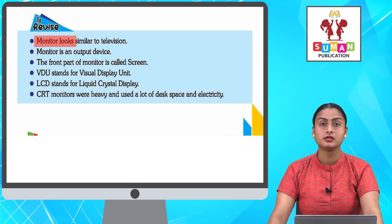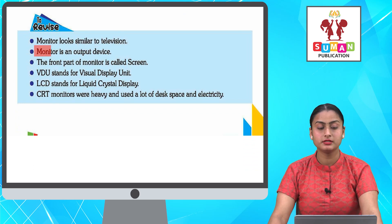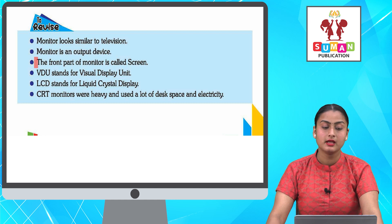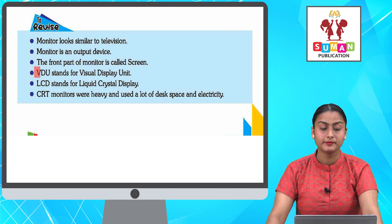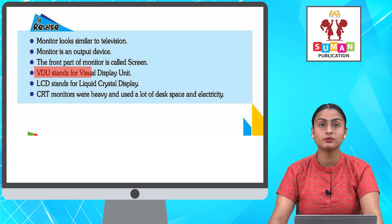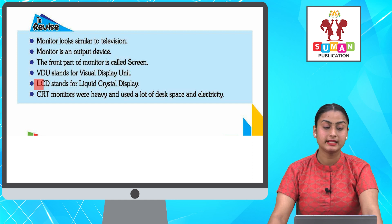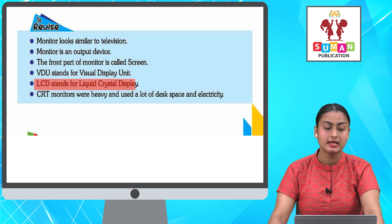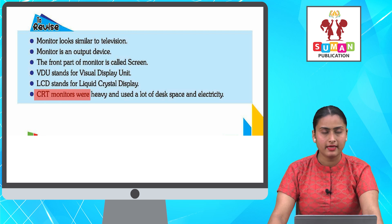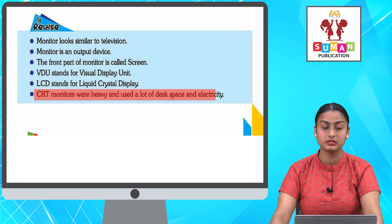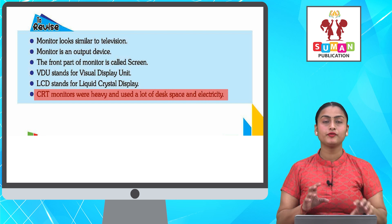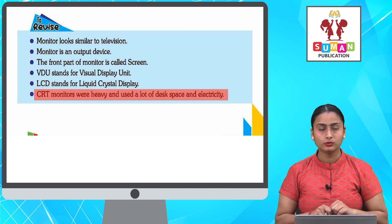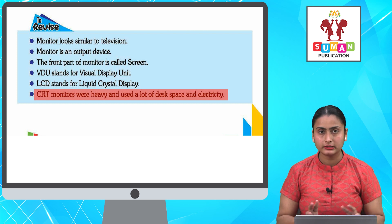To revise: A monitor looks similar to a television. Monitor is an output device. The front part of a monitor is called screen. VDU stands for Visual Display Unit. LCD stands for Liquid Crystal Display. CRT monitors were heavy and used a lot of desk space and electricity.